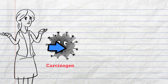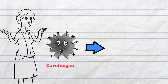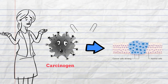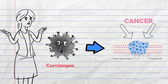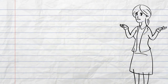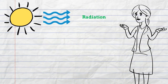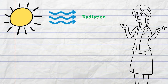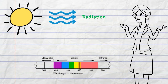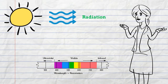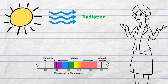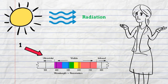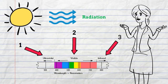Skin cancer is caused by a carcinogen, which is a substance capable of causing cancer in living tissue. In this case, the carcinogen that we're concerned with is radiation. Solar radiation is divided into three different wavelengths: ultraviolet or UV, visible, and infrared.